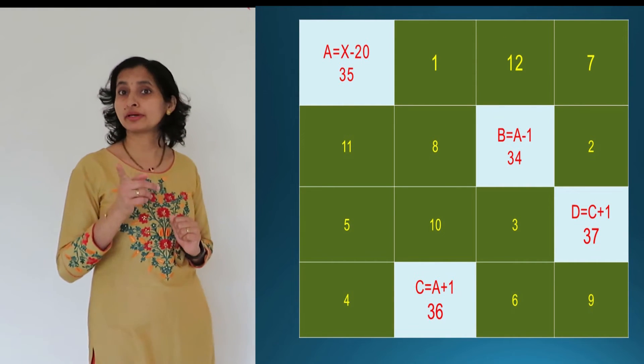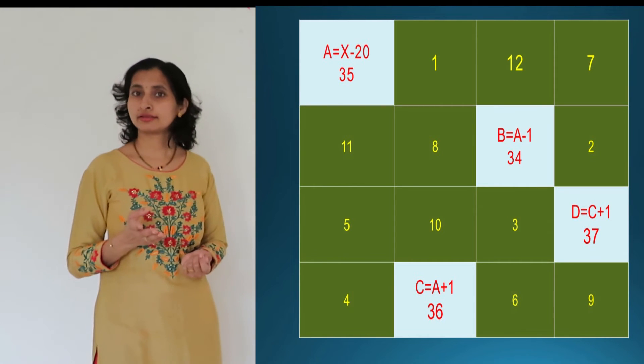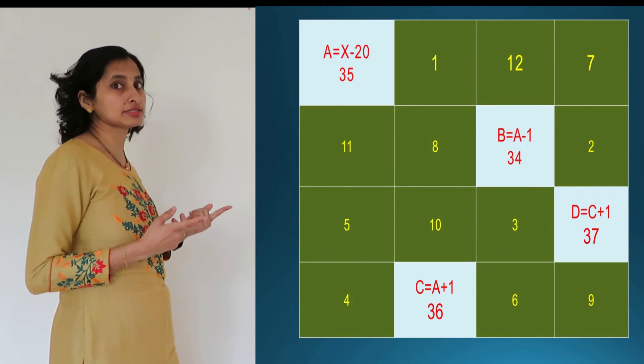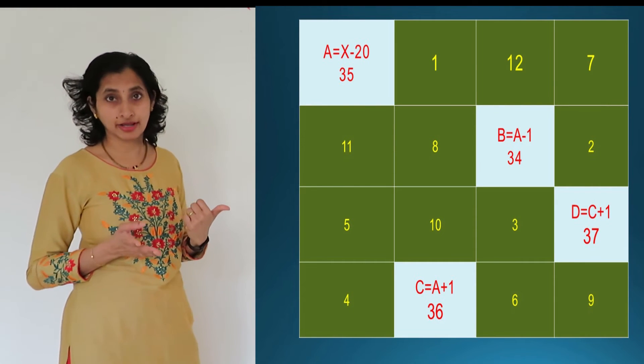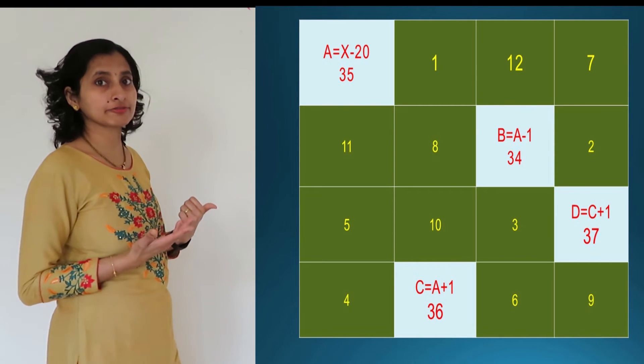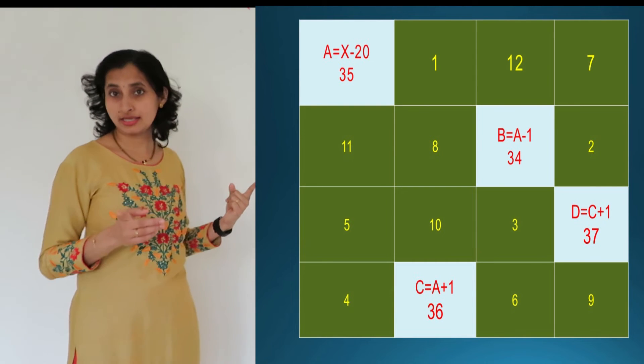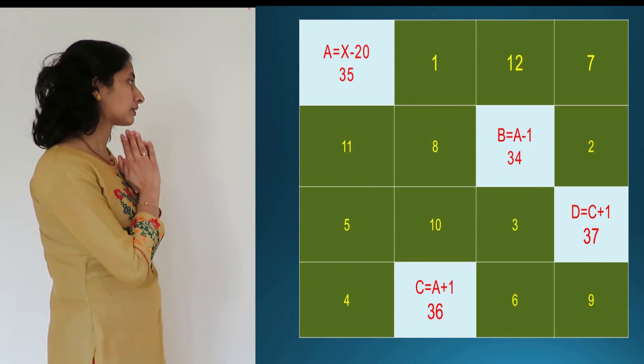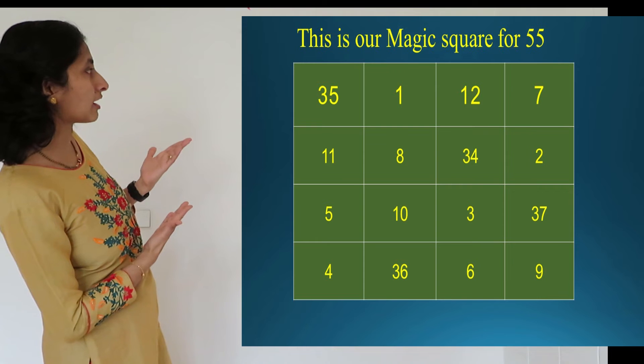Here, X is 55. Magic number is 55. So A is 35. A is equal to 55 minus 20, that is 35. And B is equal to A minus 1. A is 35, A minus 1. C is 35 plus 1, so 36. Substitute all the values. You will get the magic square. So this is our magic square.